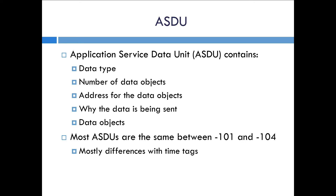ASDU is an application service data unit, and it's a concept used at the application layer. The ASDU always includes the type of data which is contained, the number of data objects in that unit, the addressing for those data objects, the cause of transmission — basically why the data is being sent — and the data objects themselves.